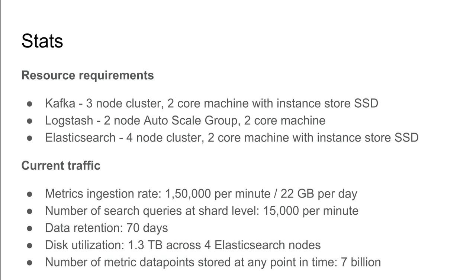Some stats about our production setup: we run a three-node Kafka cluster on two-core machines with instance store SSD. We have two Logstash instances, also two-core. Elasticsearch is a four-node cluster, two-core machines with instance store SSD. Our metrics ingestion rate is 1,50,000 per minute, roughly 22 GB per day. We run 15,000 search queries per minute at the shard level. We retain data for the last 70 days; older metrics are snapshotted to S3 using Elasticsearch's snapshot and restore API.